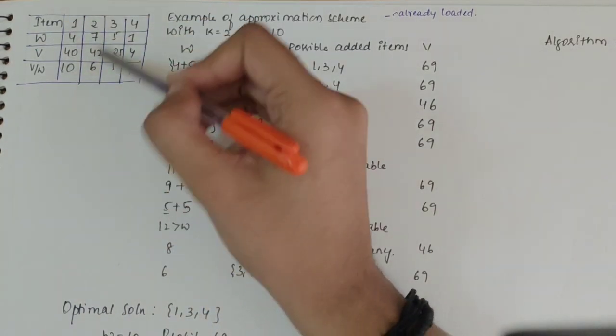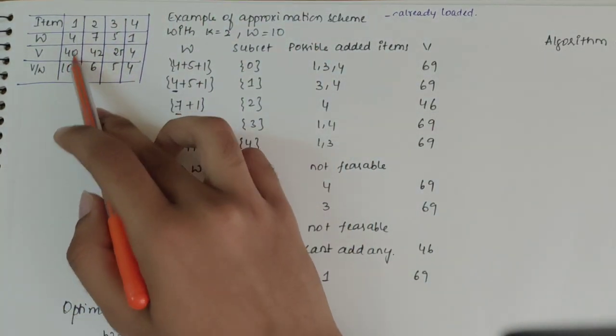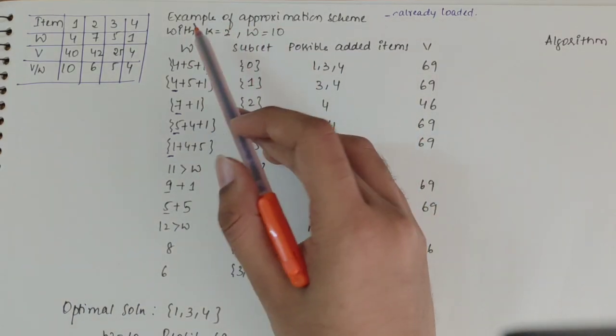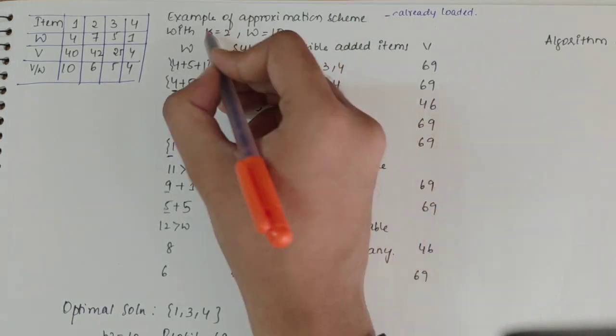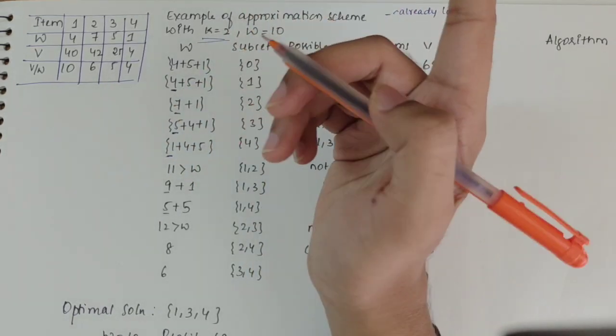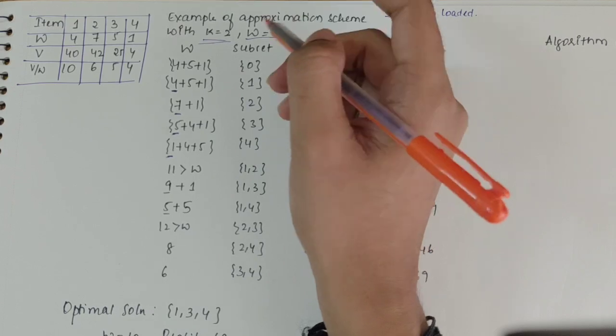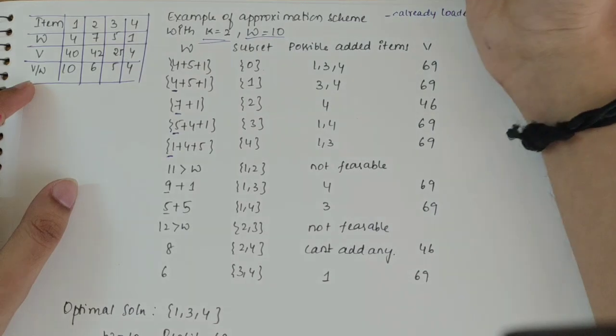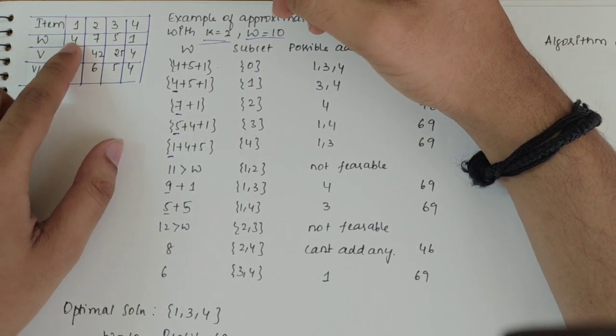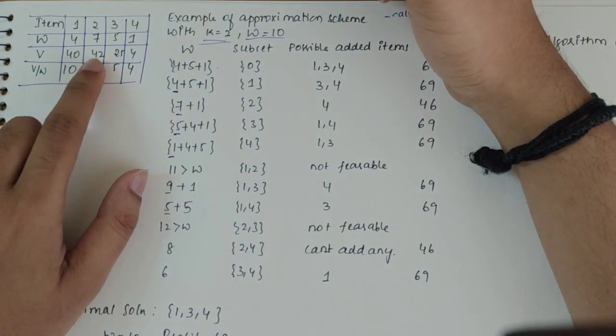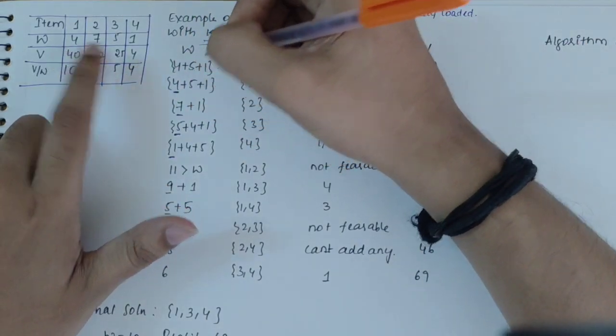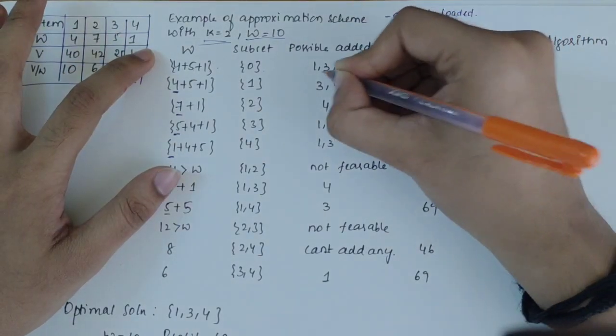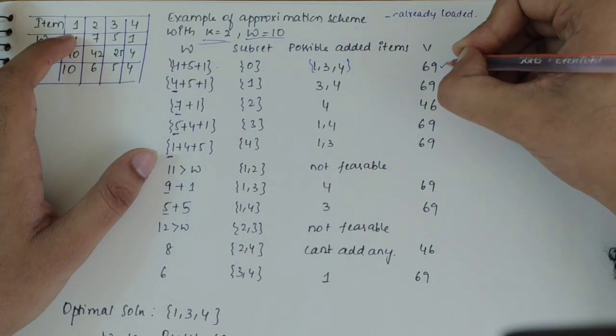We have this expression which says F of S star by F of S to the power K should be less than or equal to 1 plus 1 by K. This is the accuracy ratio. We will look into a problem to understand this better. Same problem I have taken, already sorted: 10, 6, 5, 4. My first step is this example of approximation scheme. I should select K value. If I select K value as 2, let's see what happens with W value as 10.